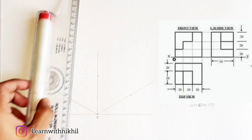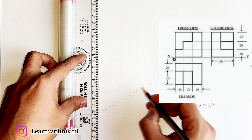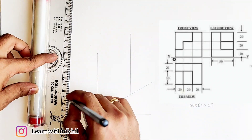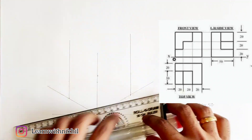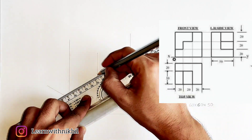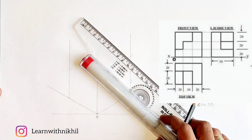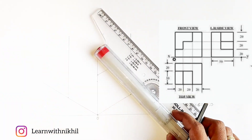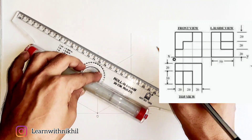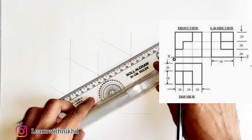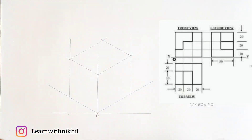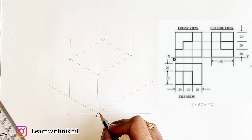Using these three dimensions — 60, 60, and 50 — we will draw a cube or rectangular box. The advantage of drawing the rectangular box is that the entire isometric figure will be contained inside this box. Drawing parallel lines through the three reference lines gives us our rectangular box.